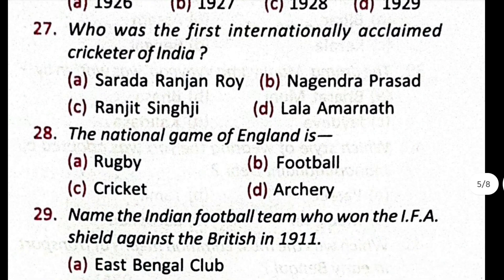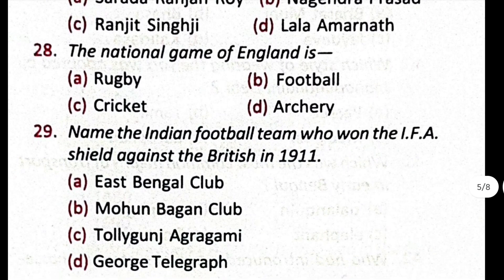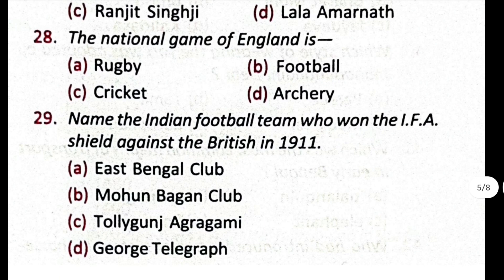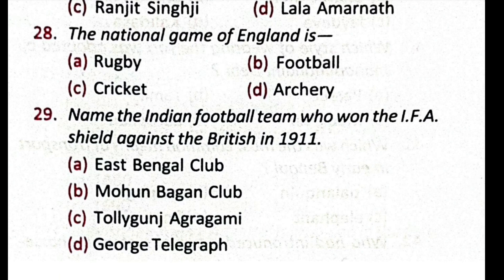Question number 28: the national game of England is — the correct answer is C, cricket. Question number 29: name the Indian football team who won the IFA Shield against the British in 1911? The correct answer is B, Mohanbagan Club.